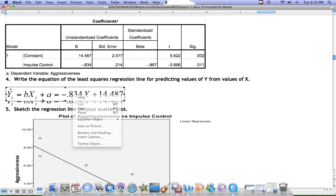we get negative 0.834 times x plus 14.487, which is negative 0.834 times 10 plus 14.487.